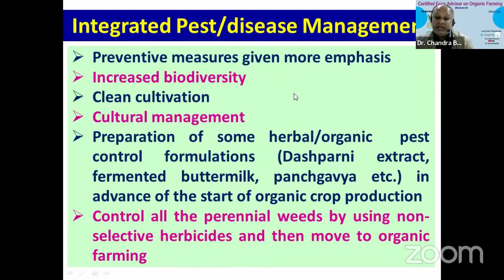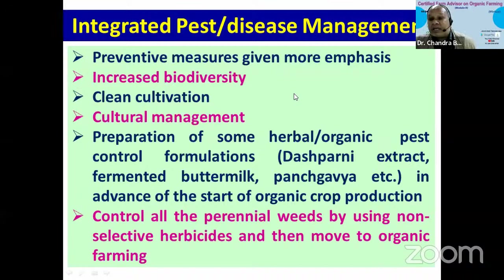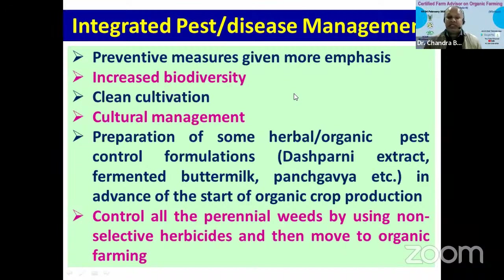Herbal and organic pest control formulations — such as Panchagavya, fermented buttermilk, Brahmastra, Agniastra, and others — should be prepared in advance of starting organic crop production. At least two formulations for insect pest management and two to three for disease management must be ready so that if any pest attack occurs, we can use those formulations as a preventive method. We must know their preparation protocol and how to use them.